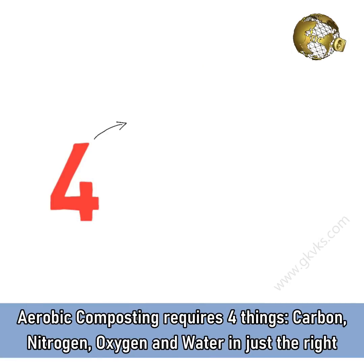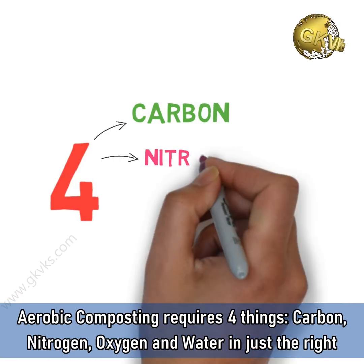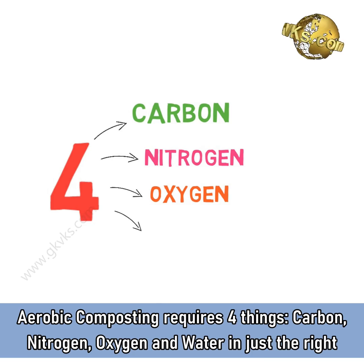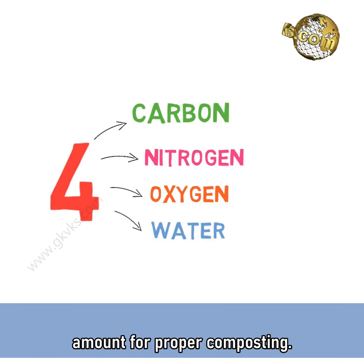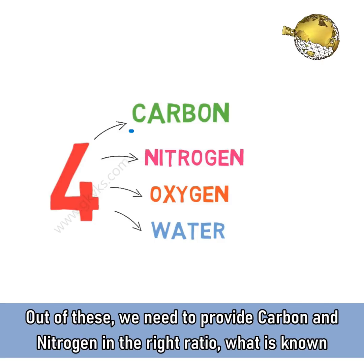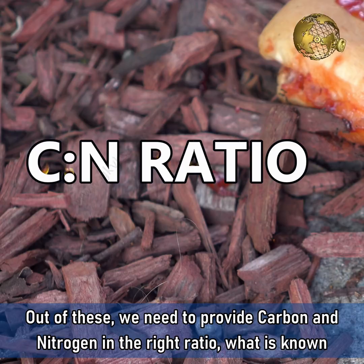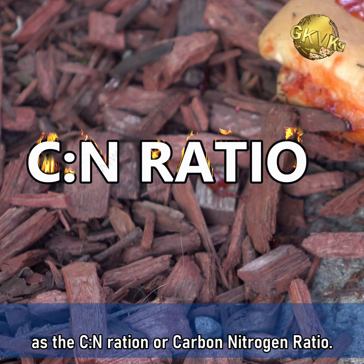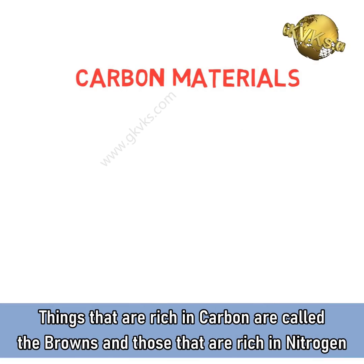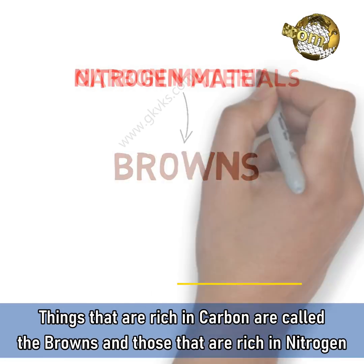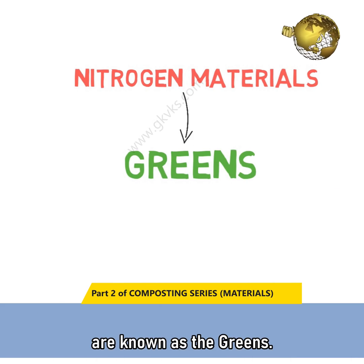Aerobic composting requires four things: carbon, nitrogen, oxygen, and water in just the right amount for proper composting. Out of these, we need to provide carbon and nitrogen in the proper ratio, known as the carbon-to-nitrogen ratio or the CN ratio. Things that are rich in carbon are called the browns, and those that are rich in nitrogen are known as the greens.